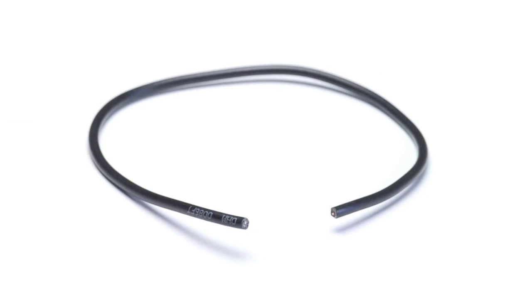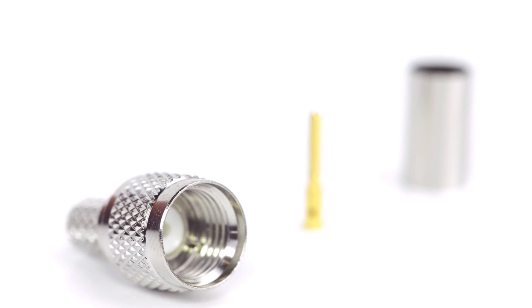For this installation you will need a coax stripper, coax cable, a soldering iron, a crimp tool, and the Mini UHF connector.